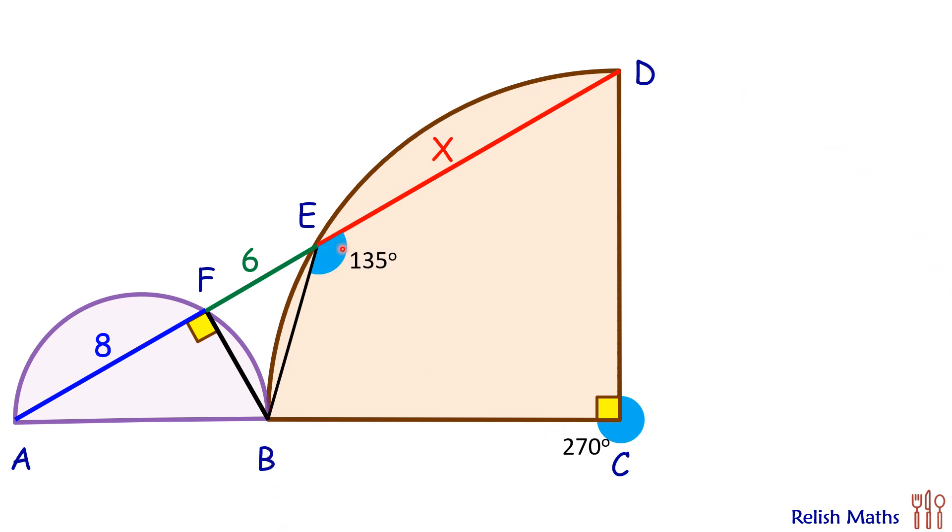If this angle is 135, then this angle here will be 45 degrees. Now here this is a right angle triangle, and thus this third angle here will also be 45 degrees.